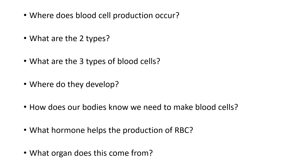What organ does erythropoietin come from? The kidneys. The kidneys pick up on the lack of red blood cells — whether picking up anemia or poor oxygen perfusion — and secrete erythropoietin, which circulates right to the bone marrow.